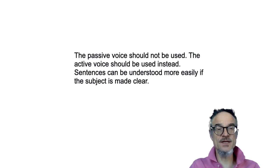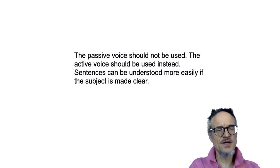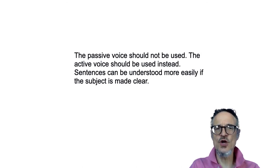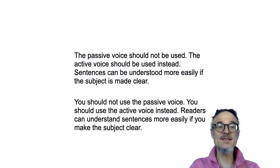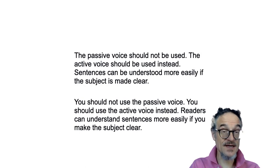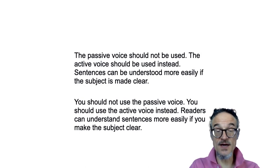Next is the passive voice versus active voice. When you're writing, we need subject, verb, object. We need to know who is doing what — who are we talking about? Using the active voice is probably better. You should not use the passive voice; you should use the active voice instead. Readers can understand sentences more easily if you make the subject clear — this tells us who does what.